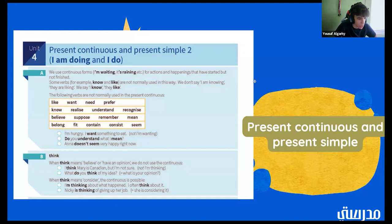So, then we have, when think means believe or have an opinion, we do not use the continuous. I think Mary is Canadian, but I'm not sure. Or, what do you think of my idea? Which is asking for someone's opinion. So, when think means consider, the continuous is possible. I'm thinking about what happened. I often think about it. Or, Nikki is thinking of giving up her job. She is considering it.